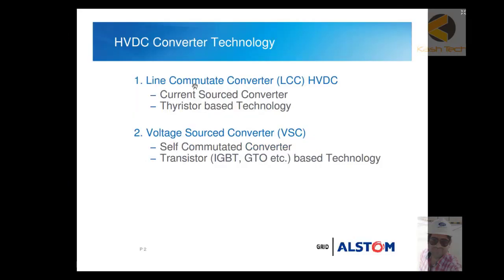Here is a comparison between voltage source converters (VSC) and line commutated converters (LCC) for HVDC stations. Line commutated converters are current source converters based on older thyristor technology. The newer technology, first introduced by ABB, is voltage source converters. VSCs are light in weight, economical to use, and are self-commutated converters using IGBT and GTO transistor-based technology.